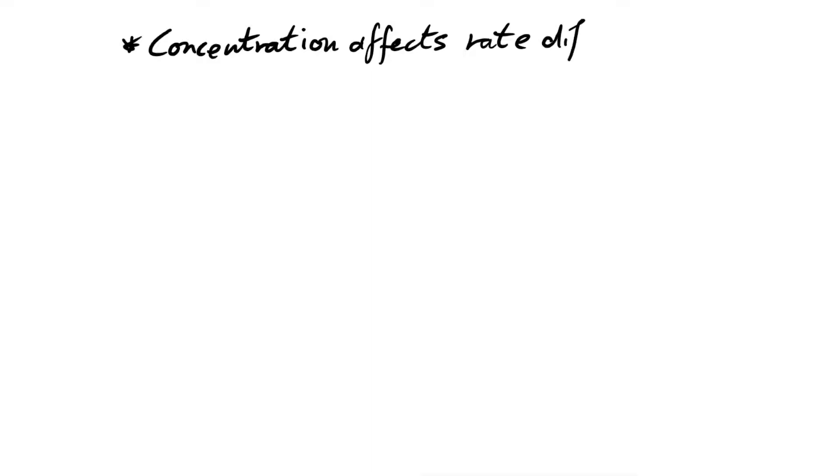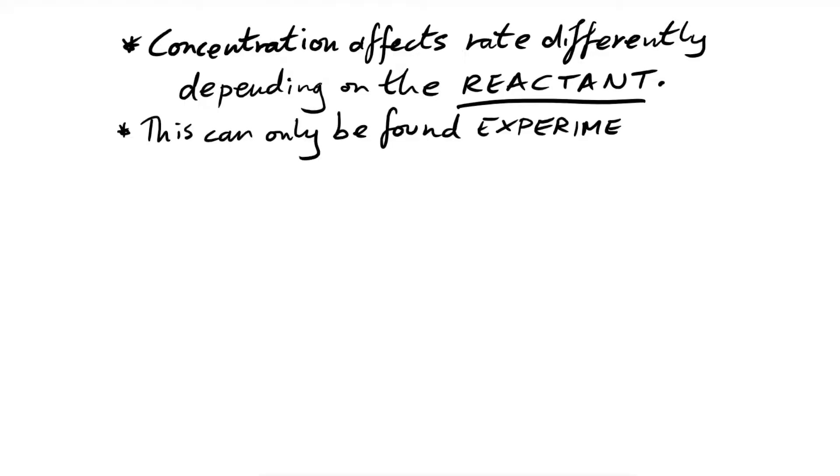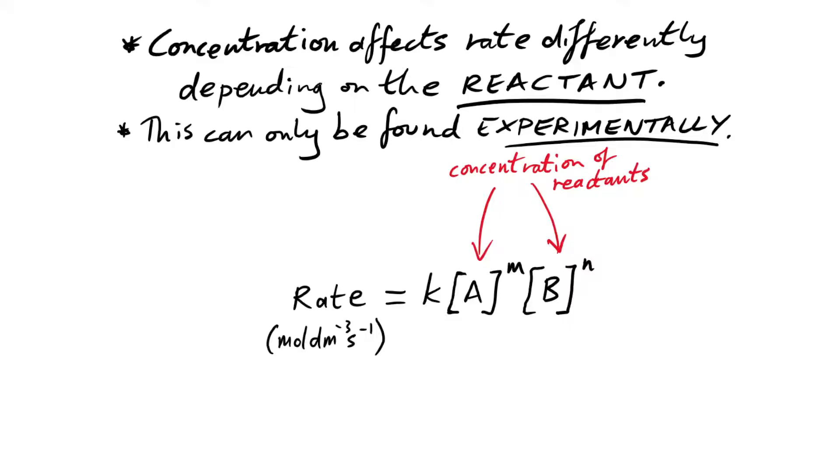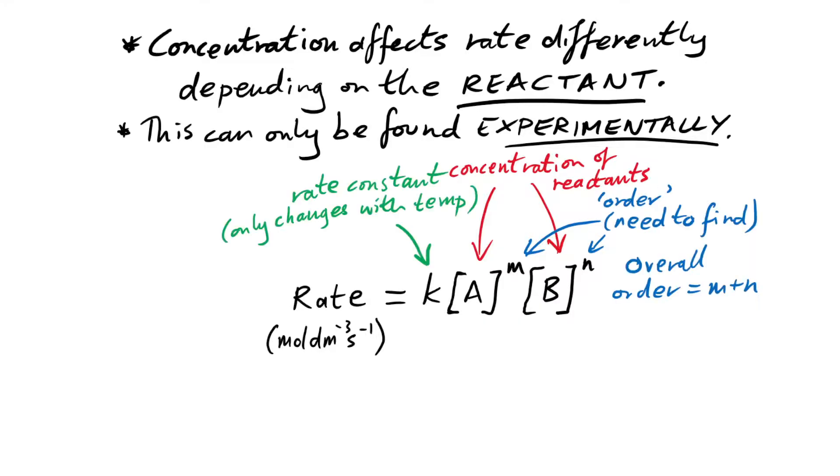And you've seen probably most of that stuff before, but this is where it gets a bit trickier. You see, concentration affects rate differently depending on the reactant. This can only be found experimentally. So here's our rate equation. Rate equals K, some constant, times the concentration of the first reactant A to the power of M times the concentration of B to the power of N. What are M and N? They are the order with respect to their reactant. Incidentally, we say that the overall order is just M plus N.